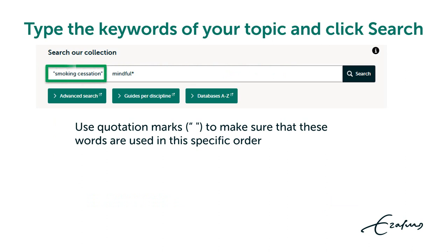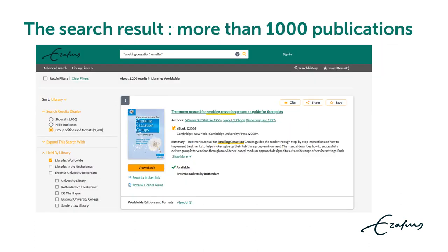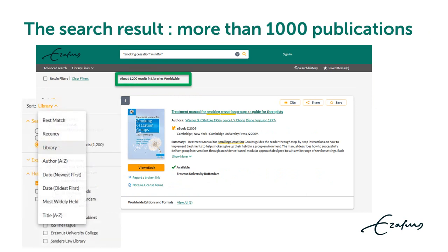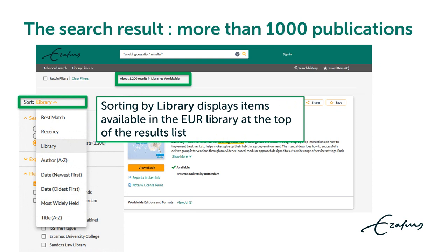Type in the keywords of your topic and click search. The keyword phrase 'smoking cessation' is enclosed in quotation marks to make sure that these words are found together. The keyword 'mindful' is truncated on the right with an asterisk to find words starting with 'mindful'.